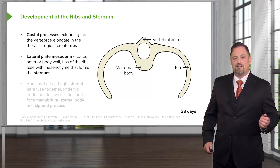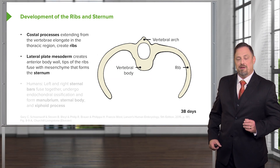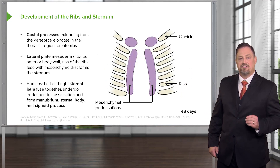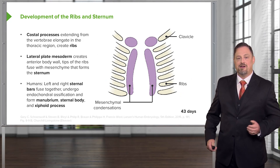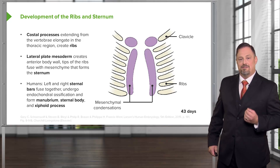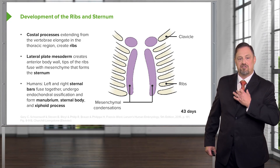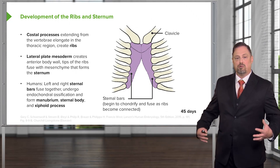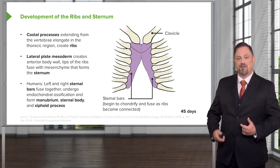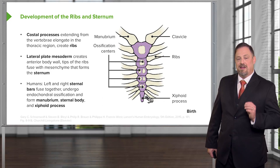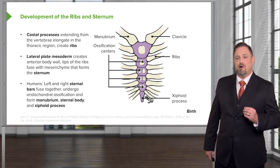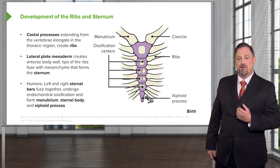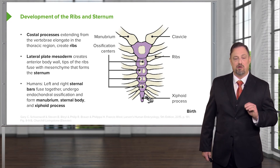The rib-forming sclerotome extends further and further anteriorly along with the somatopleure, and when it meets at the anterior body wall, the leading edge contains condensations that are going to become the sternum. These sternal bars — one on the left and one on the right — are going to fuse as the somatopleure fuses, forming the sternum: its upper portion the manubrium and its lower portion the xiphoid process. The sternal bars fuse from superior to inferior and pull the ribs forward so we wind up with a completely enclosed thorax. Ossification centers within the sternal bars then convert it to bone, ultimately giving us the manubrium, sternum body, and xiphoid process anchoring the ribs at the anterior body wall.